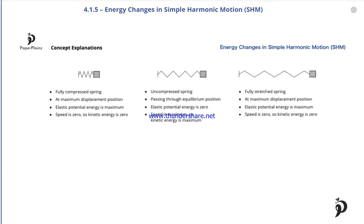So when an object oscillates on a spring, assuming that there is no friction, elastic potential energy is converted into kinetic energy, and then kinetic energy is converted back into elastic potential energy. These conversions repeatedly happen while the object oscillates.